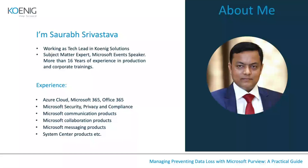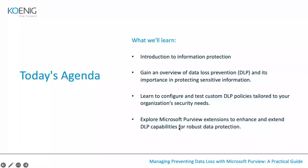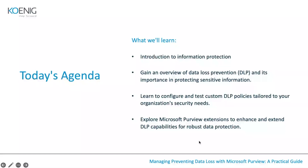Let's go over today's agenda. First, we discuss information protection in Microsoft 365. Then we cover DLP — data loss prevention — what it is and how to use it to protect sensitive information. Next, we cover how to configure and test a custom DLP policy and what components are involved. Finally, we discuss the Microsoft Purview extension to extend DLP capabilities.